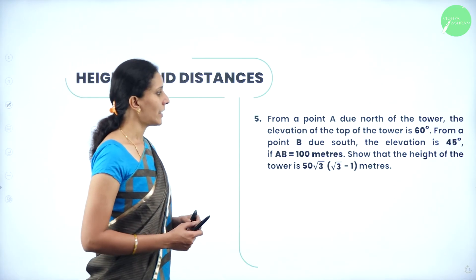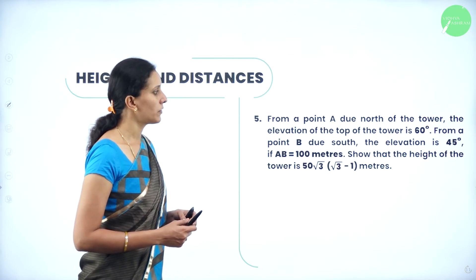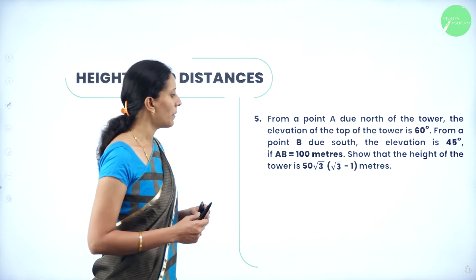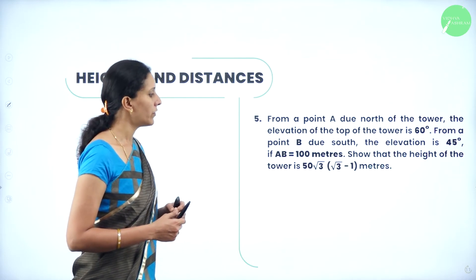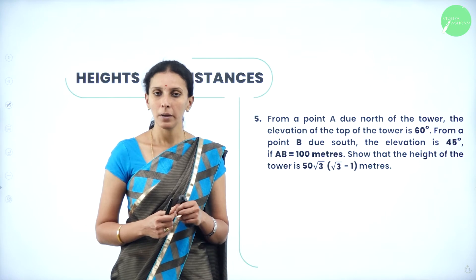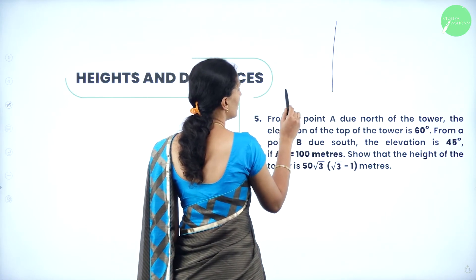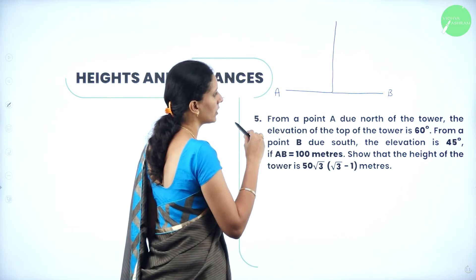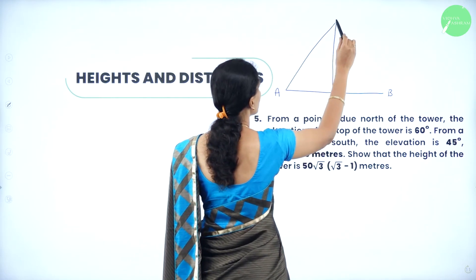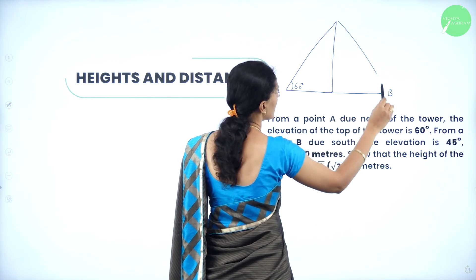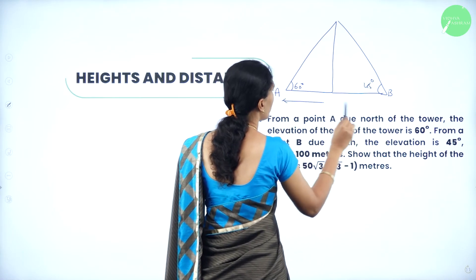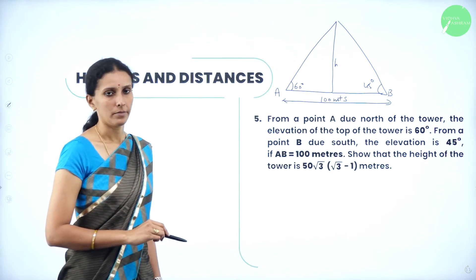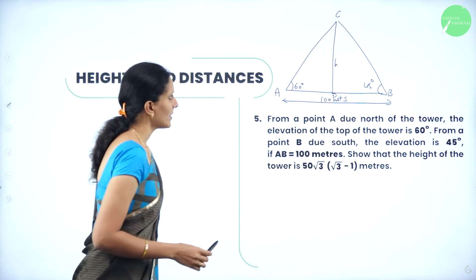Next question: from a point A due north of the tower, the elevation of the top of the tower is 60 degrees. From a point B due south, the elevation is 45 degrees. If AB is 100 meters, show that the height of the tower is 50 root 3 times (root 3 minus 1) meters. We have a tower with north and south directions — point A to the north and point B to the south. From point A the angle of elevation is 60 degrees, and from B it is 45 degrees. The distance AB is given as 100 meters. Let me name the base points C and D.